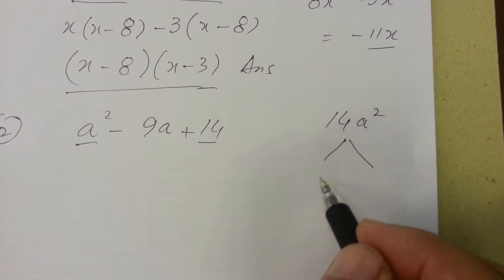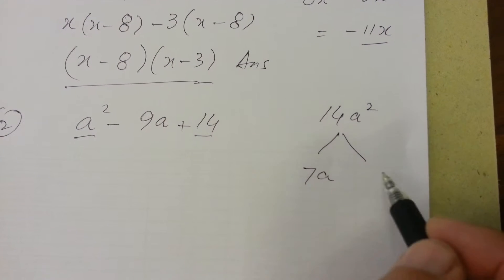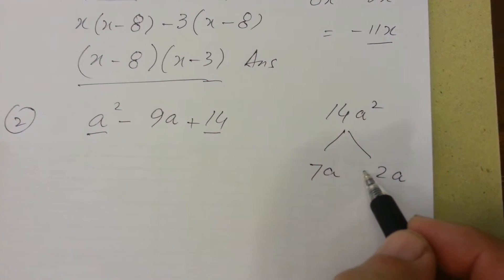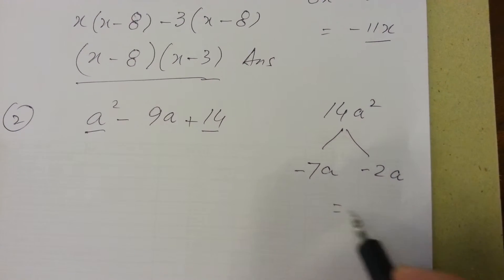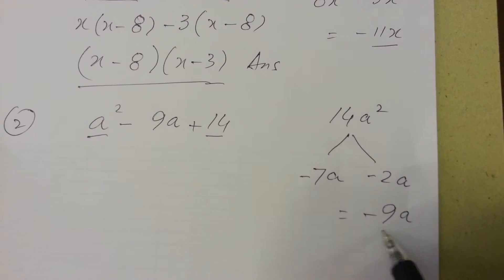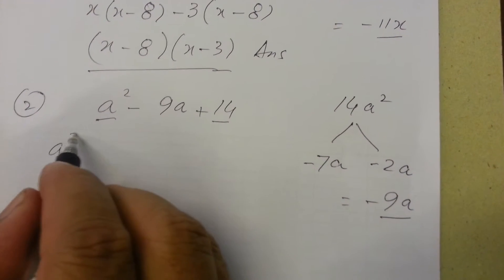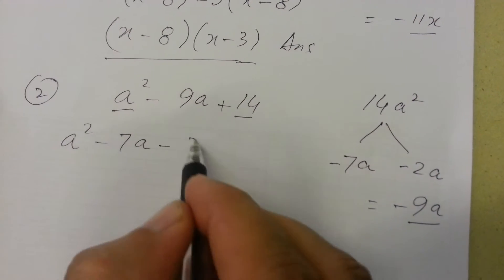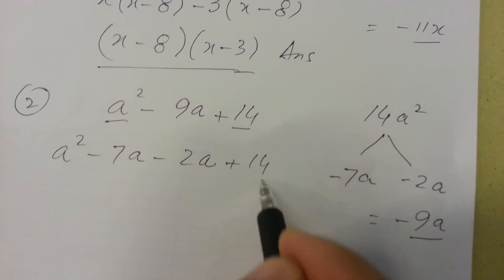Now we have two terms 7a and 2a. Putting negative sign with these two we will get minus 9a on addition. Here will be a squared minus 7a minus 2a plus 14.